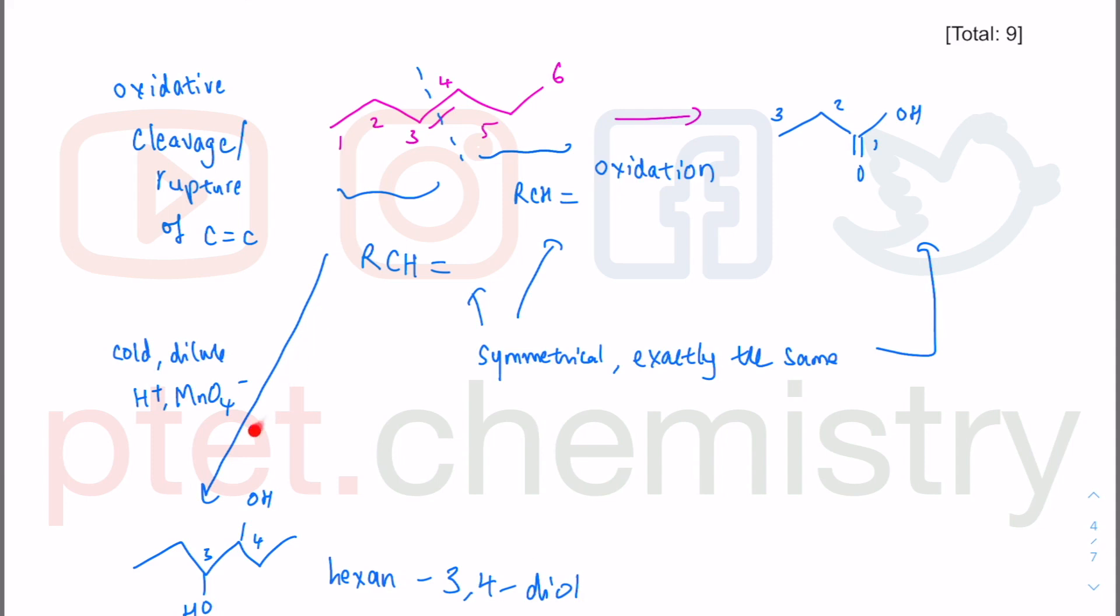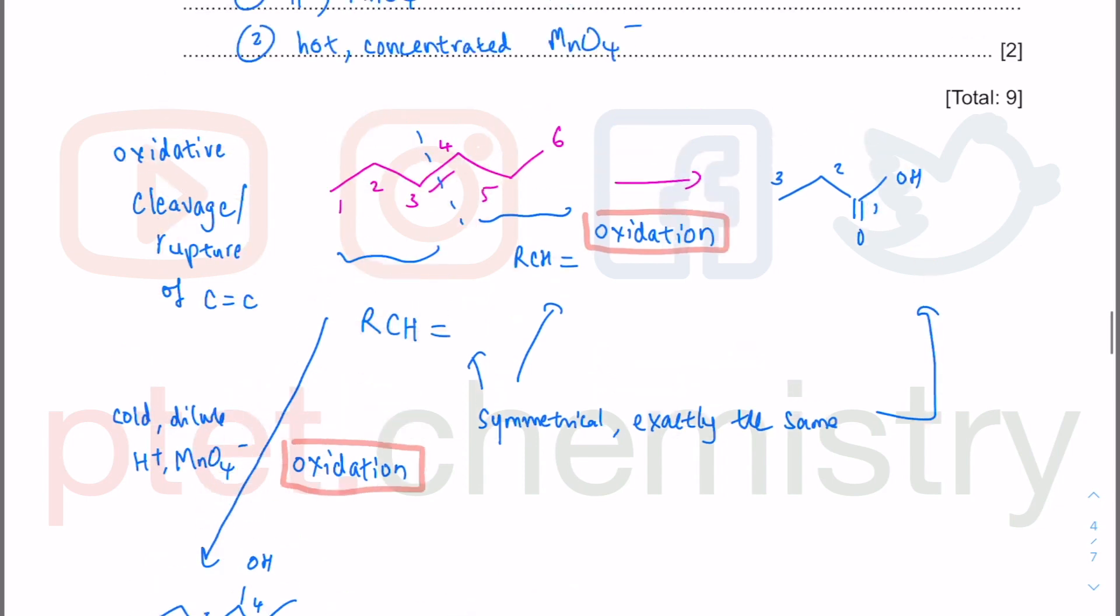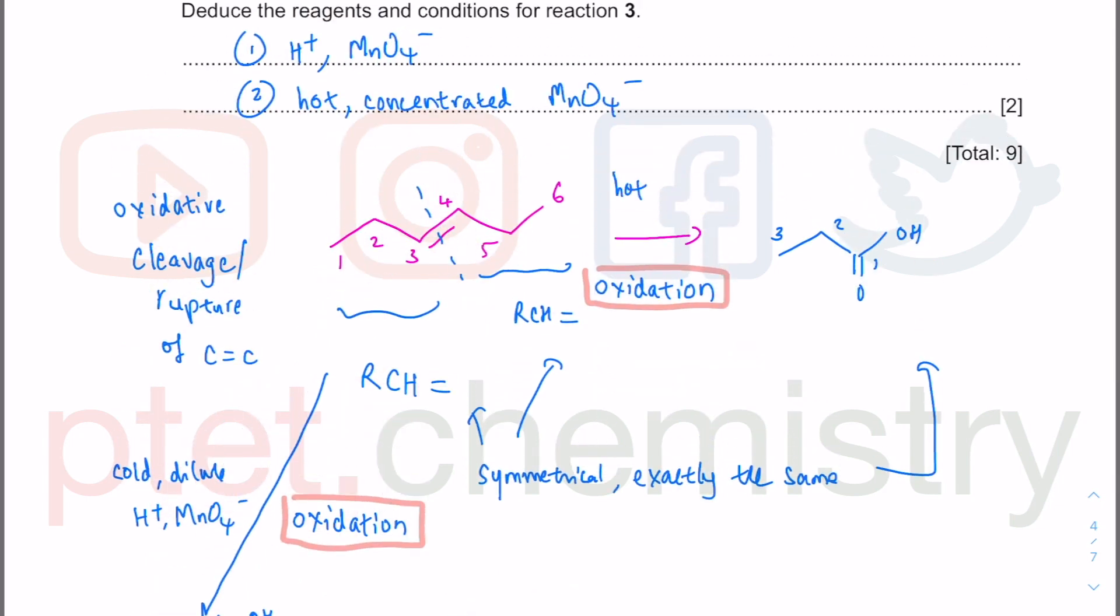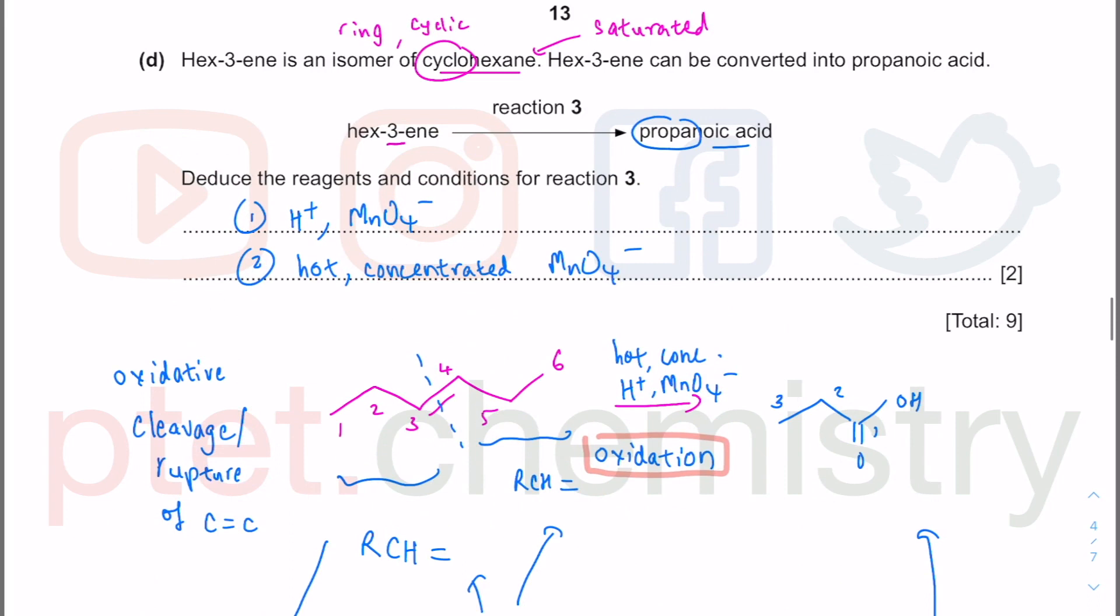That would be under mild oxidation. This is under extreme oxidation. Both of them are oxidation as well, it's just that one is under milder conditions. If you want to rupture the carbon-carbon double bond you have to use hot concentrated KMnO4 - hot, concentrated. But be careful, you need the acid. Without the acid it will not be able to oxidize this. It will not be able to act as an oxidizing agent if you decide to use the word. Be very careful you need the complete - acidified.